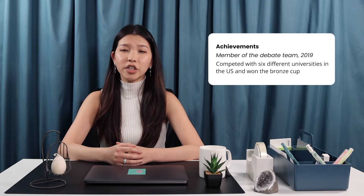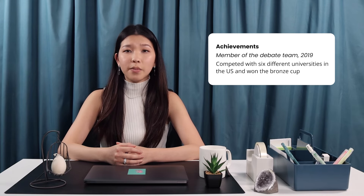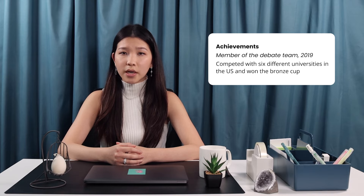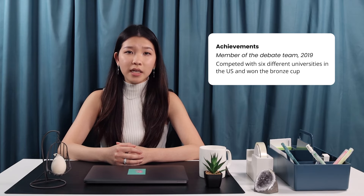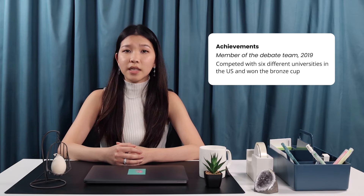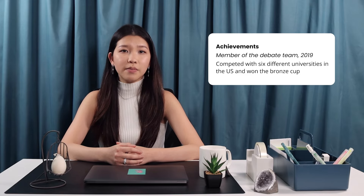Similar to your experience section, expand on every educational bullet point. A few examples to go under your school's name could be 'member of the debate team 2019, competed with six different universities in the US and won the bronze cup,' or 'A-plus in business studies and chemistry.' As long as you can explain how these experiences are relevant for the job you're applying for, it doesn't matter how long ago they were. If you have plenty of space to fill up, a good tip is to turn your relevant coursework into a bulleted list so each course is on its own line.